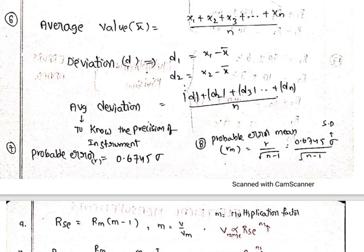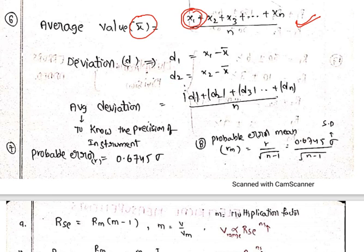Average value formula: x̄ = (x1 + x2 + x3 + ... + xn) / n. Deviation formula: d1 = x1 − x̄, that is, a particular value minus the average value. For d2, it is x2 − x̄, and so on. Like that we calculate the deviation for each particular value.